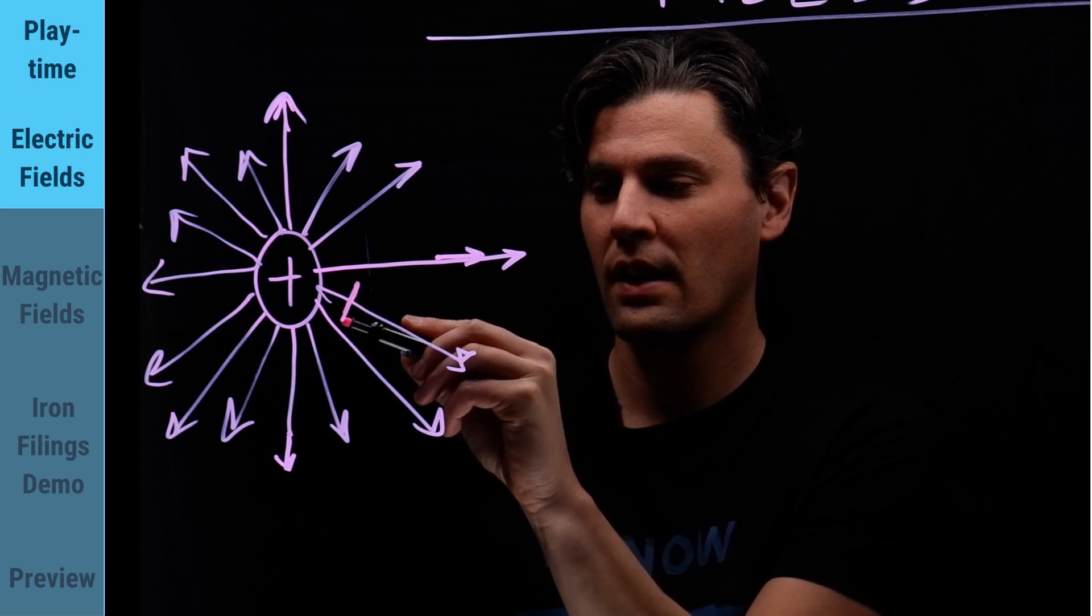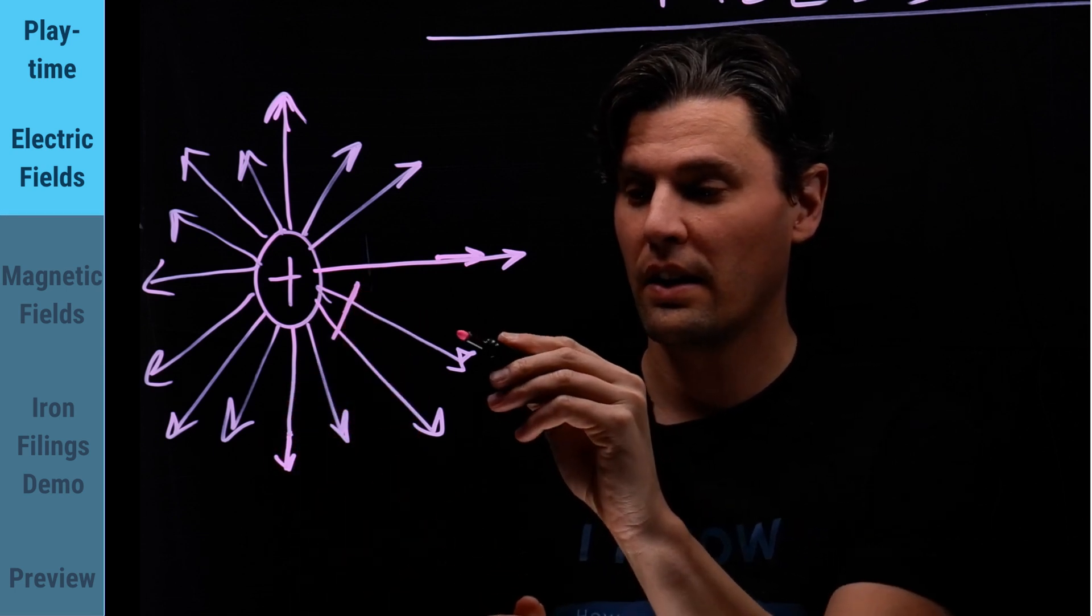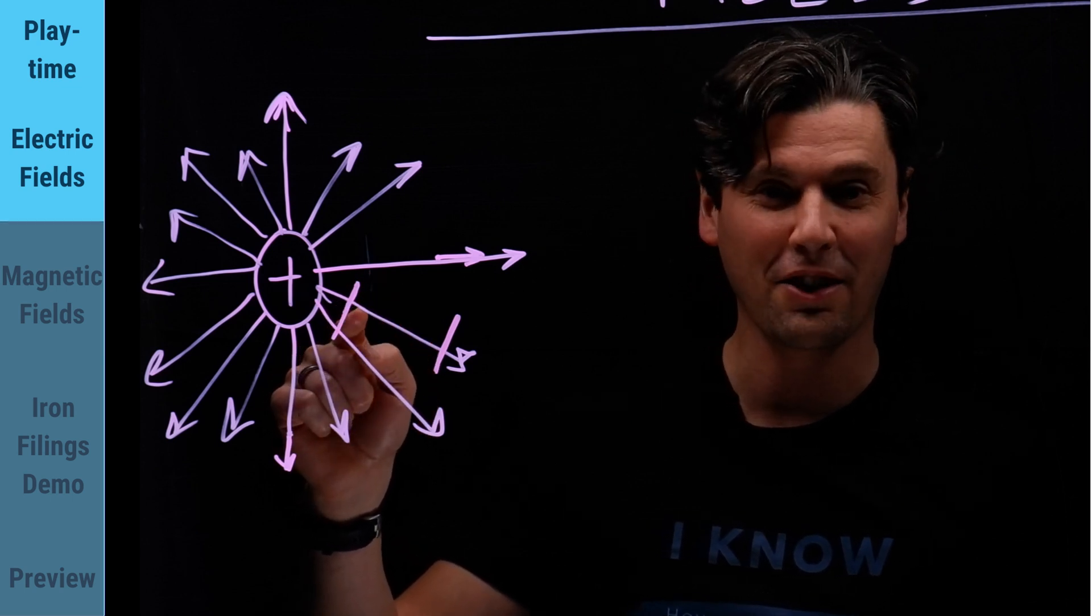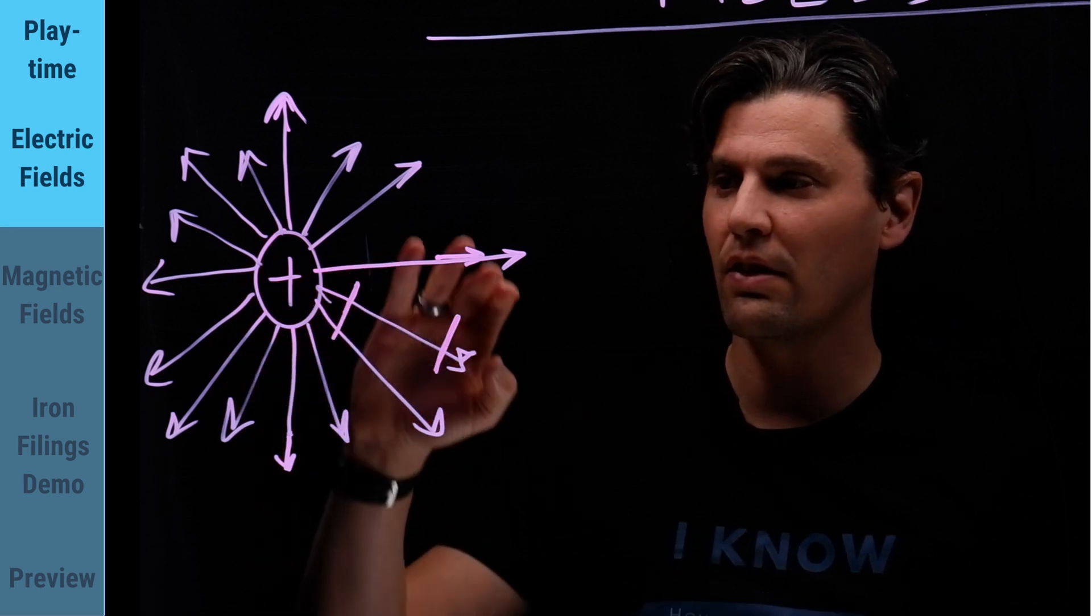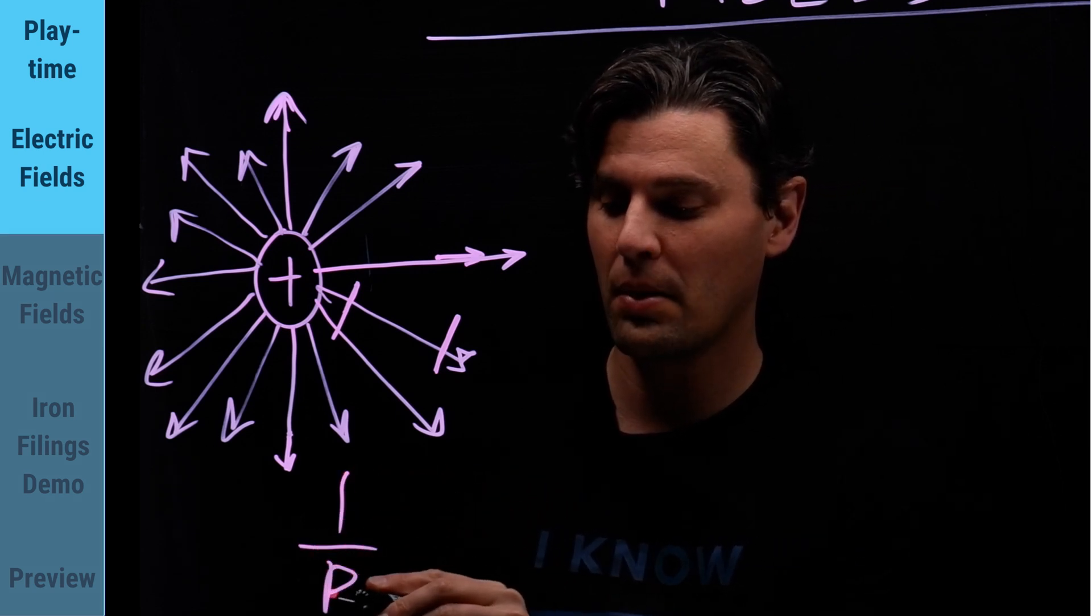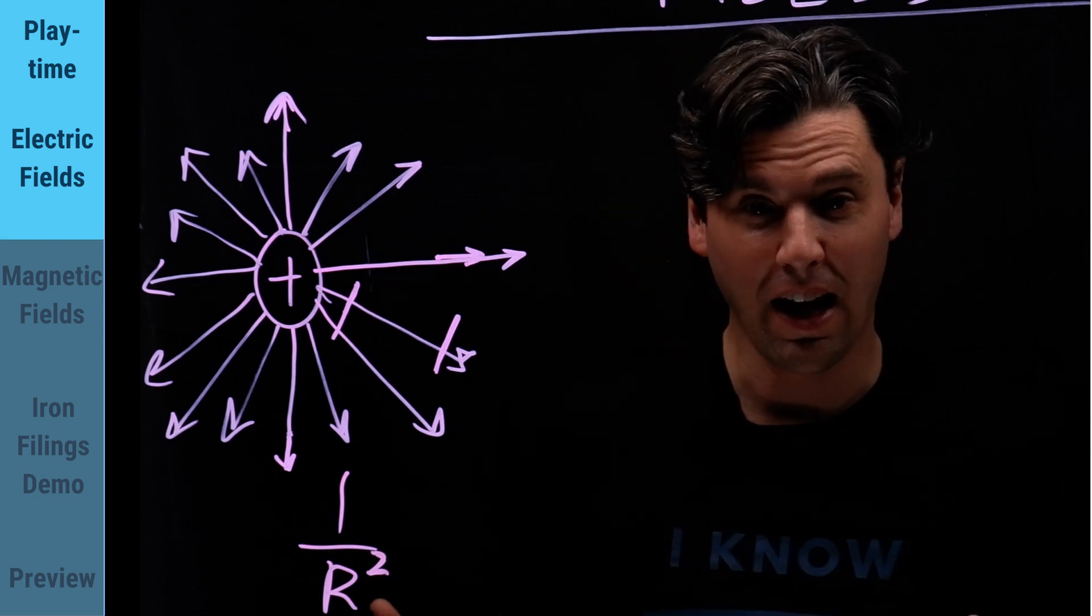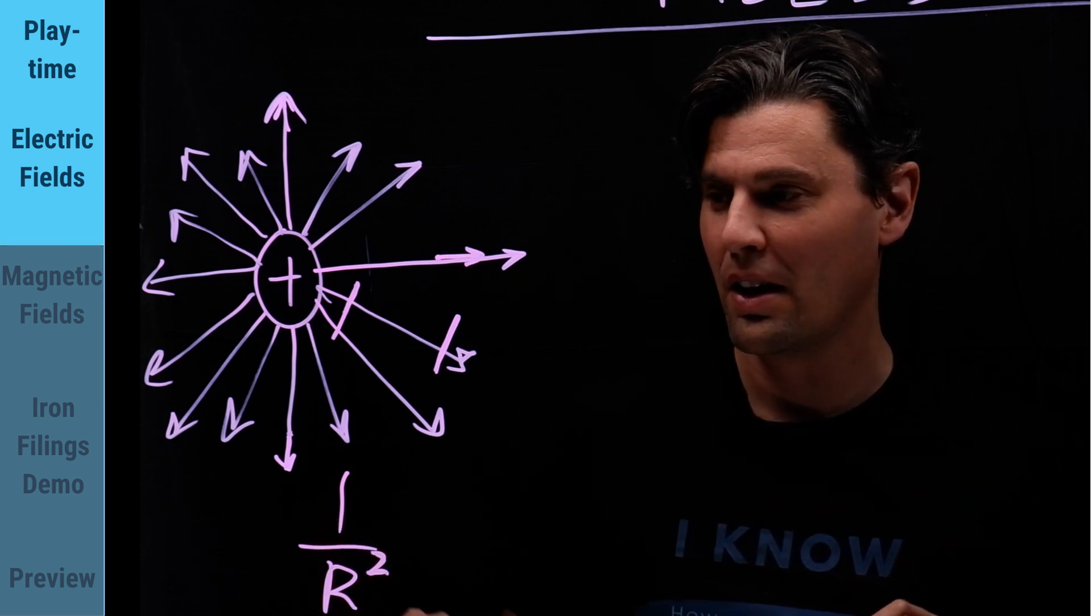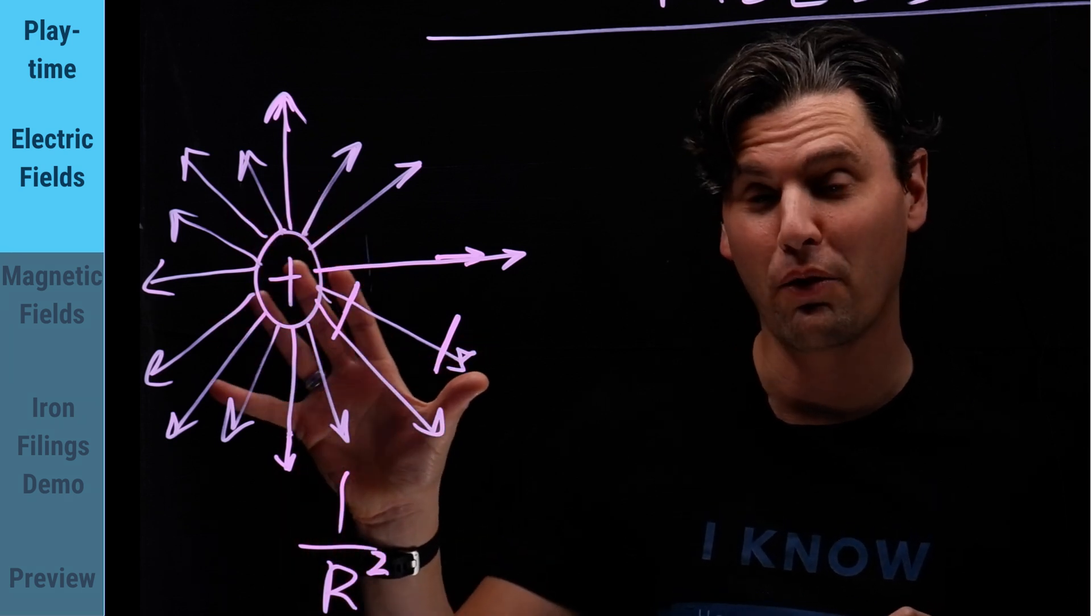If we draw a line here then draw a line of the same width out here, you can see here it's intersecting two lines and here it's only intersecting one line. As you go further away, the density of lines is getting less. This is actually following the same 1 over r squared that we're familiar with in radiology, coming away from a point charge.